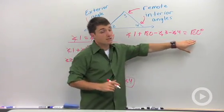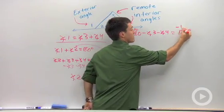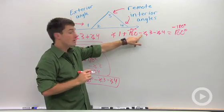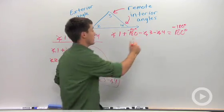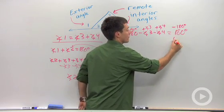I see I have 180 degrees on both sides, so I'm just going to minus 180 and then that will make them disappear. And if I move negative angle three and negative angle four to the other side by adding angle three and angle four...